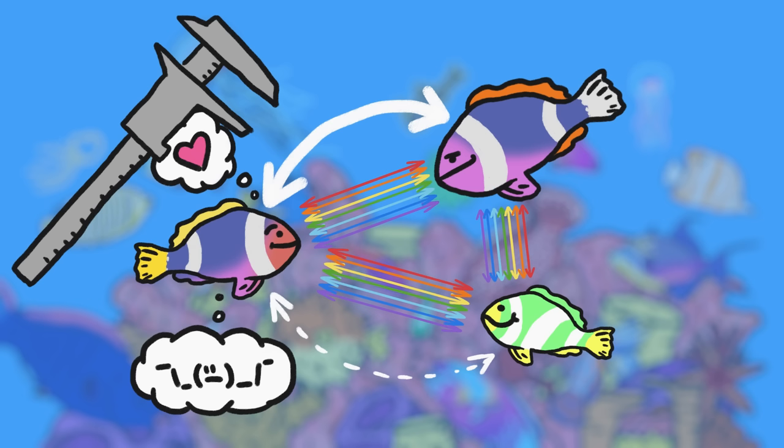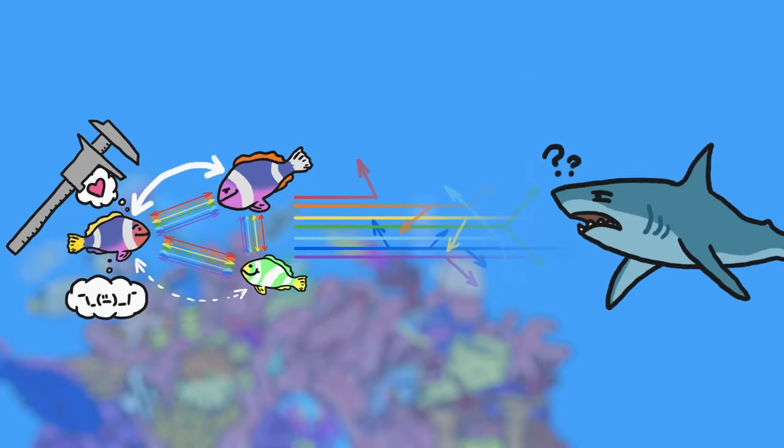In other words, brightly colored reef fish get the best of both worlds. They can be super conspicuous to each other, while also being well camouflaged from predators.